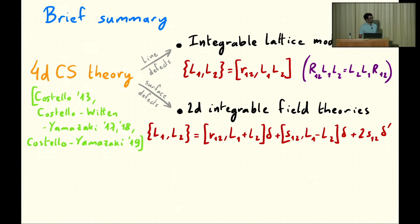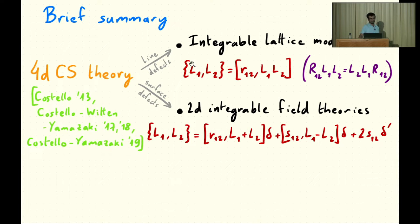Let me start with a very brief summary by reminding you that 4D Chern-Simons theory is sort of like a mother theory for integrable systems, in the sense that it can be used to describe two different types of integrable systems. In particular, if you introduce line defects in the 4D Chern-Simons theory, you can describe integrable lattice models, whose integrable structure is underpinned by the RLL relation structure.